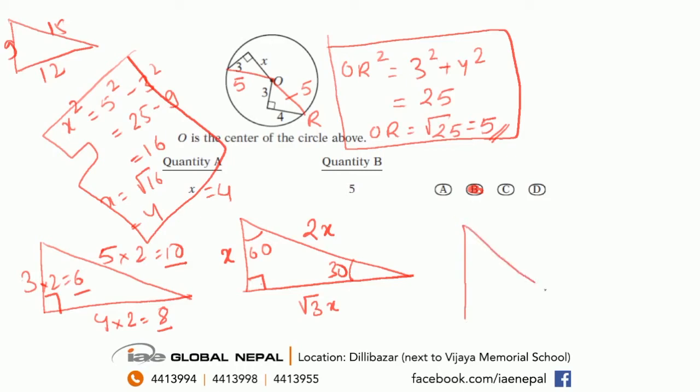Another triangle that's very good to know is your 45-45-90 triangle, in which this will be x, this will be x, this will be equal to root 2x. So these triangles, if you know by heart, can save you a lot of time. So let's illustrate that with another example.